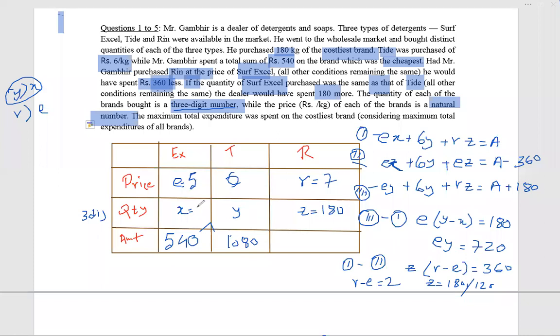So this will be 108. This will be 7 into 180, that is 1260. This is 6. What about y? We have ey equal to 720. That means y is 144.